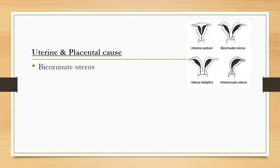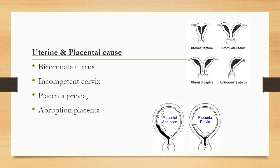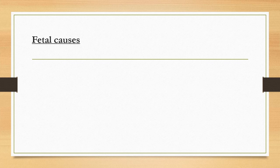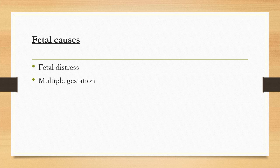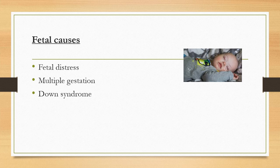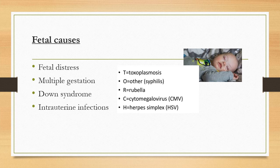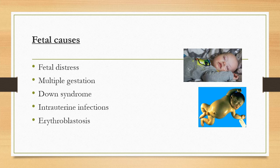Uterine and placental causes include bicornuate uterus, incompetent cervix, placenta previa, and abruption. Fetal causes include fetal distress — commonly due to cord around the neck among other reasons — multiple gestation, genetic syndromes like Down syndrome, and intrauterine (TORCH) infections including toxoplasmosis, rubella, cytomegalovirus, herpes, syphilis, erythroblastosis fetalis, and non-immune hydrops. All of these can lead to premature birth.